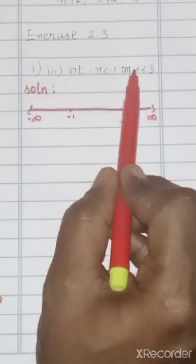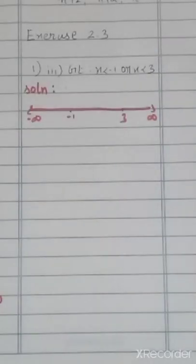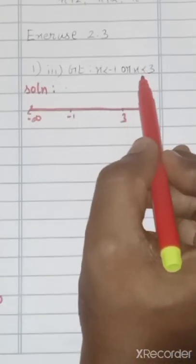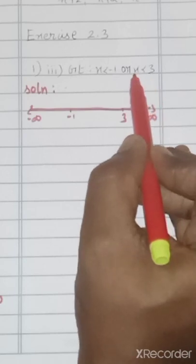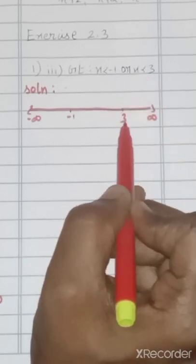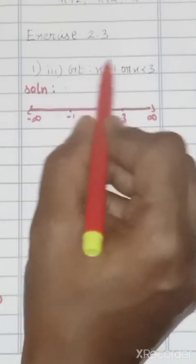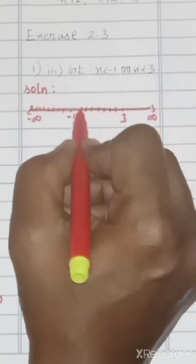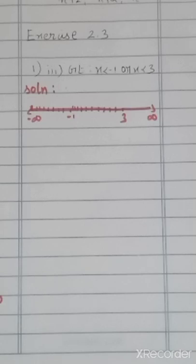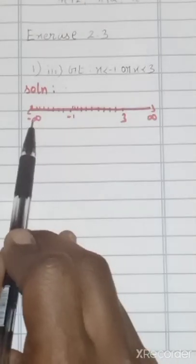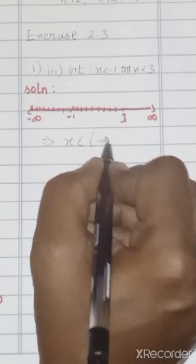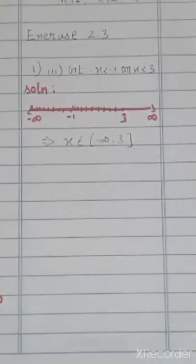x < −1 or x < 3 — either value we can take. x < −1 means this area; x < 3 means this area. All together, the solution is minus infinity to 3. Therefore, x ∈ (−∞, 3).